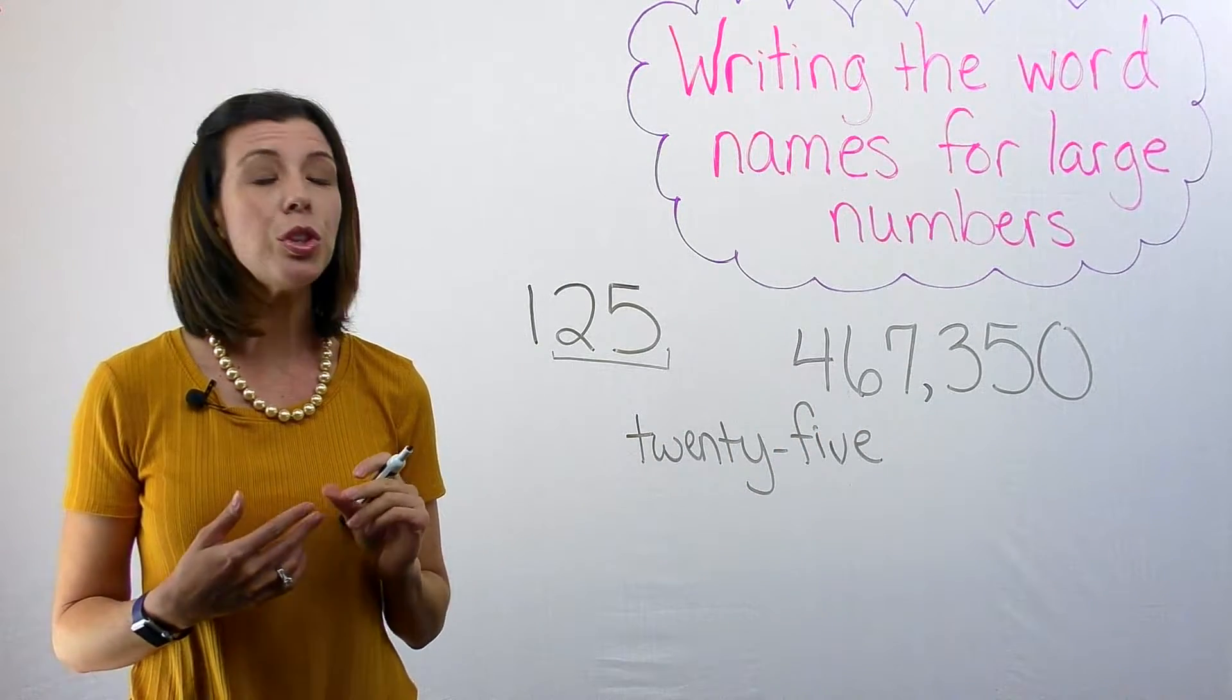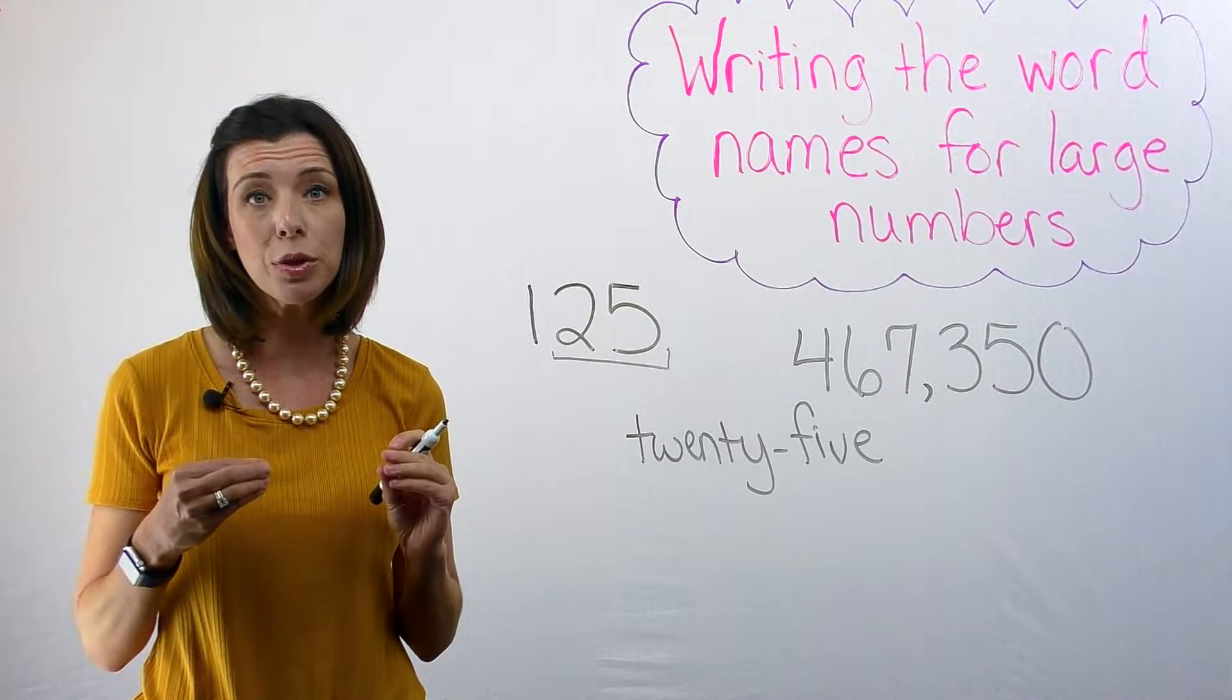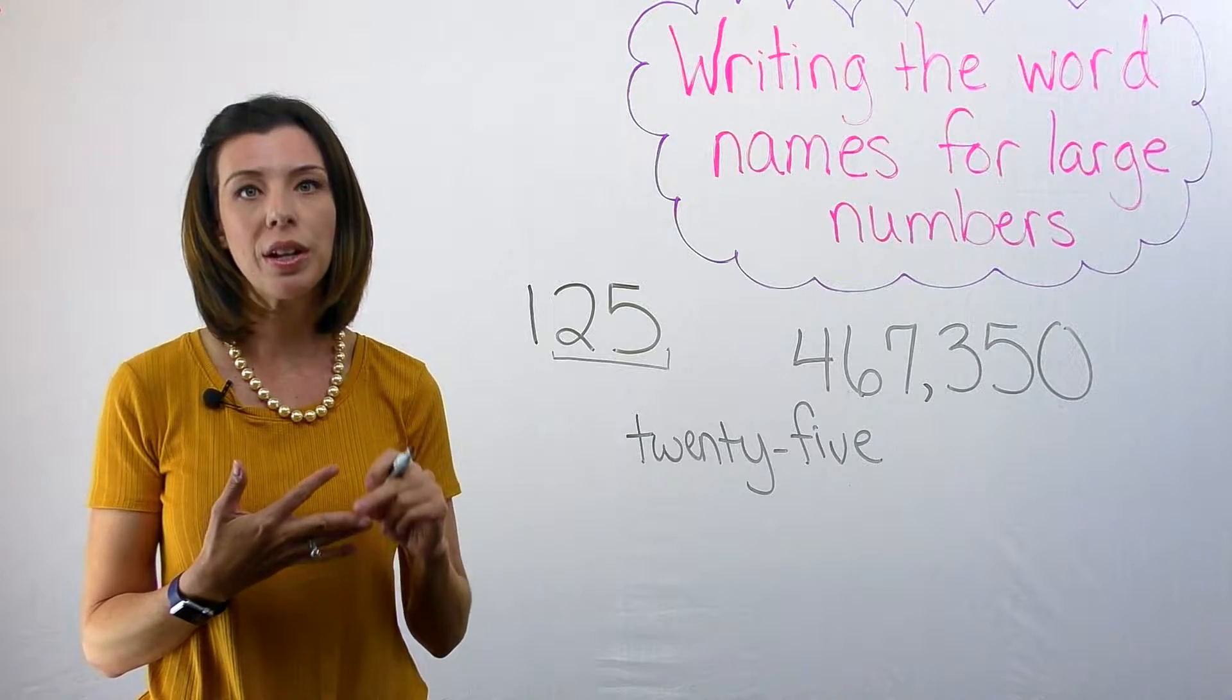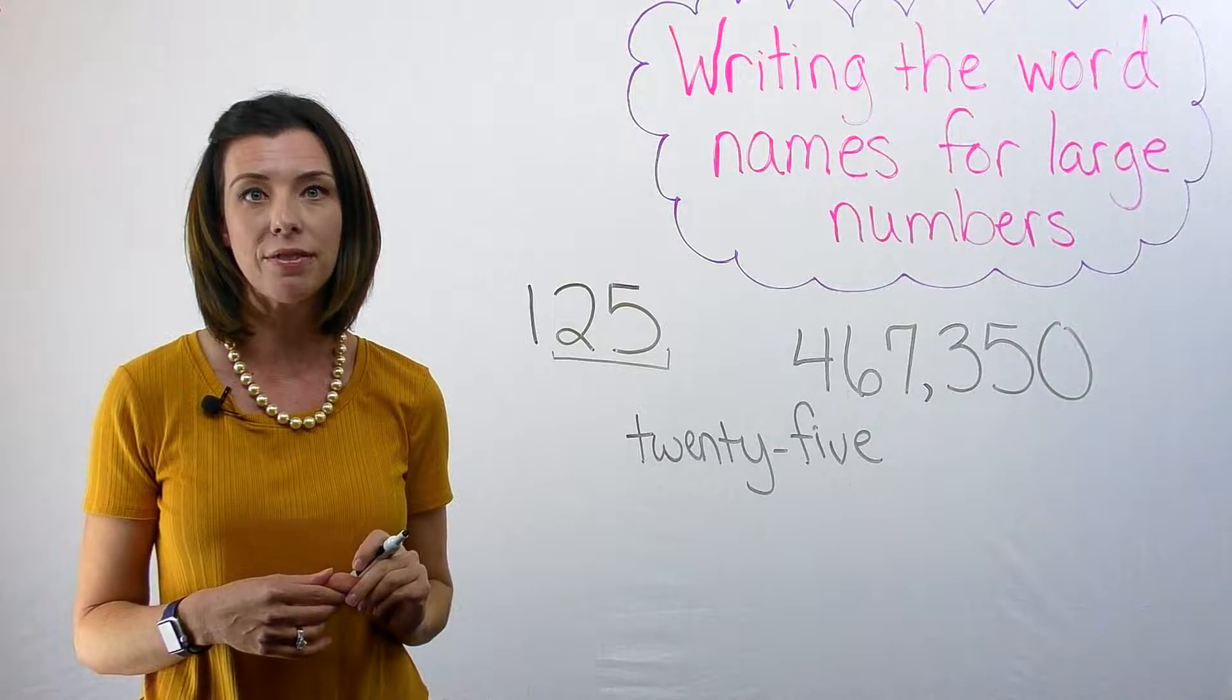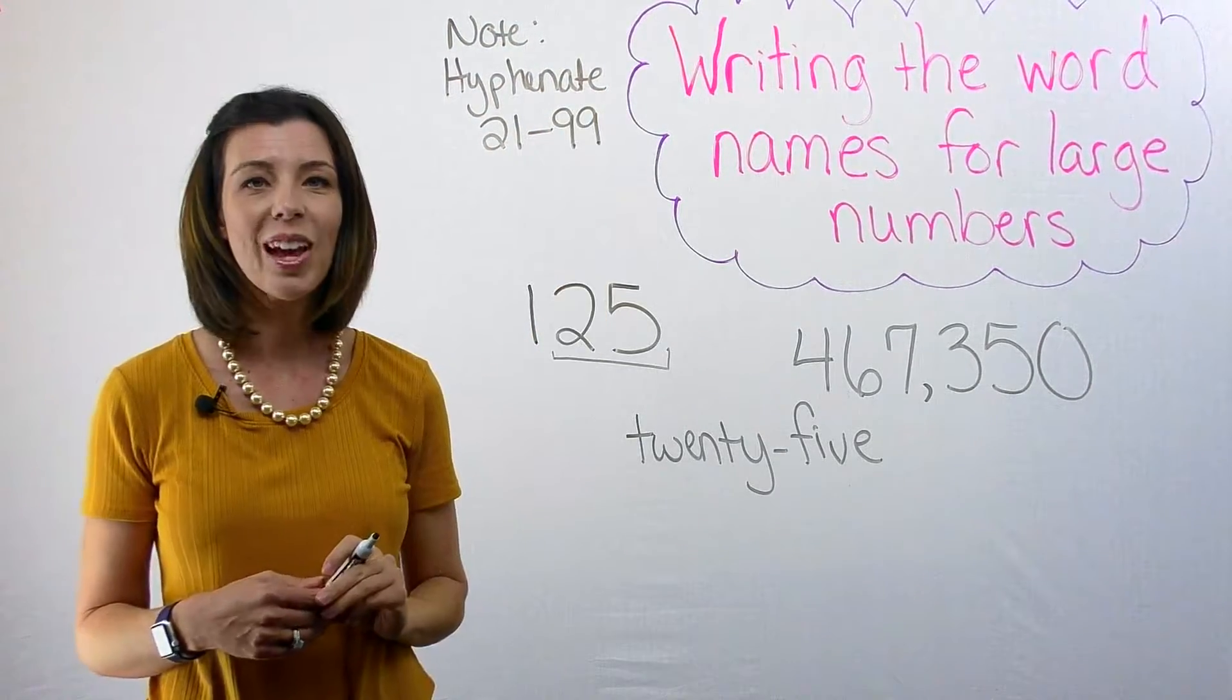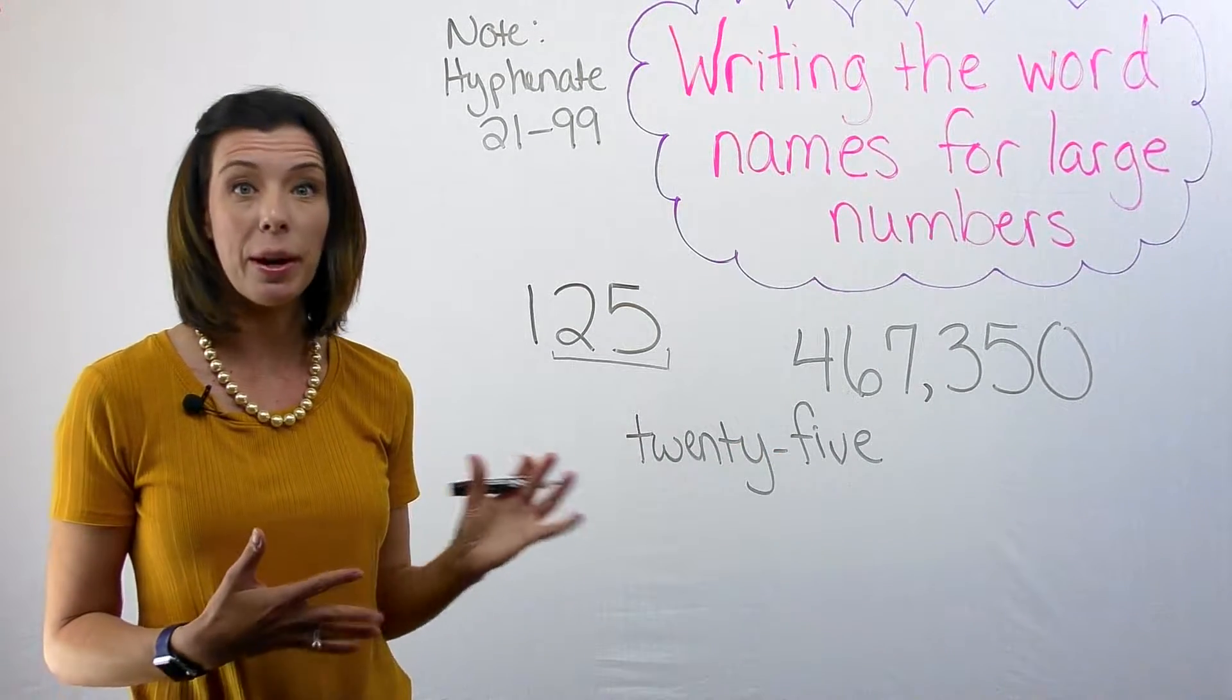Just a little side note, you always want to hyphenate numbers that are between, that start with 21 and go up to 99. So 21, 22, 23, and so on, all the way up to 99, those are always going to be hyphenated. I'm going to make myself a note.